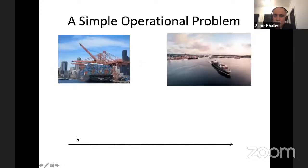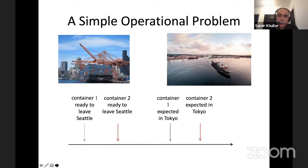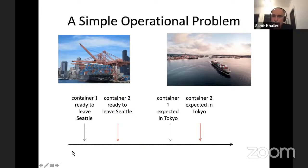We began to think about challenges in a data center world as well as a physical world. Consider container ships: a container is ready to leave a port, and there's a deadline when it's expected at another location. Other containers also need delivery with different release times. The question becomes: when should I schedule the ship? If I schedule it as soon as the first container is available, the second container needs a separate ship. But if I delay and schedule only once after the second container is available, both can be carried together. The cost could be one trip versus two trips — you can think of this in many applications.